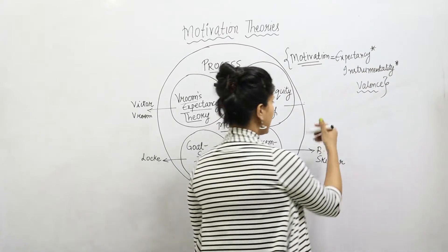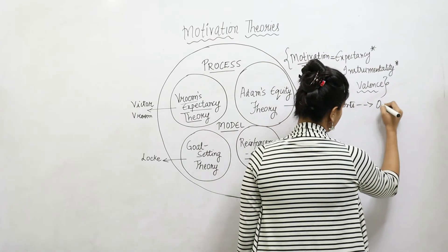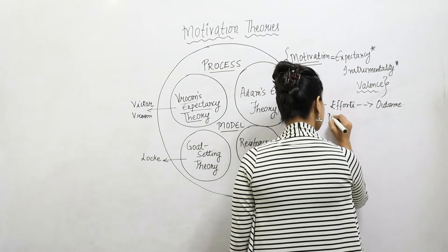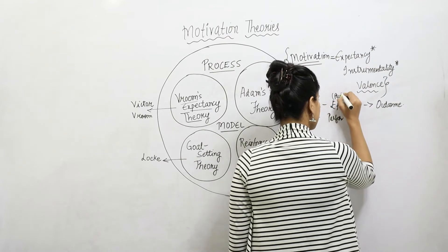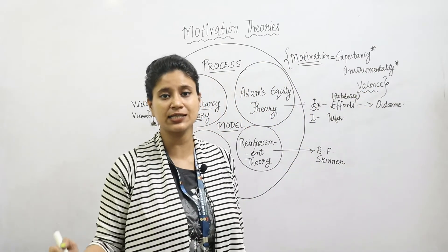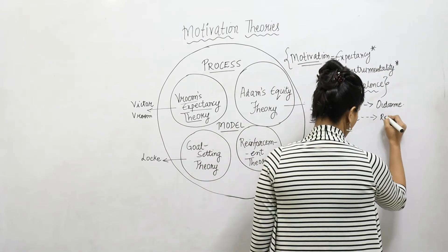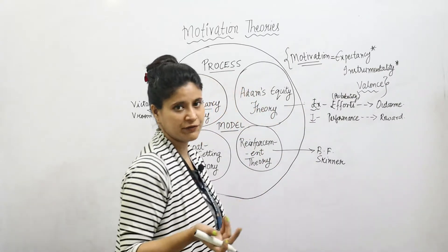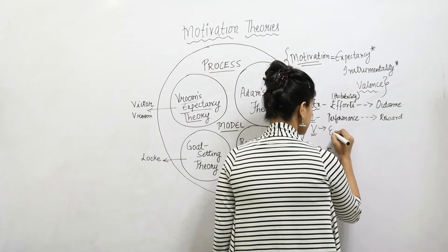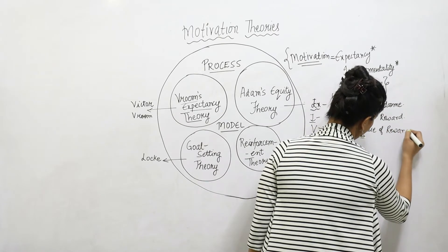Let's understand each component more clearly. Expectancy means that certain efforts lead to an outcome — if I put in efforts, they will lead me towards the outcome. Instrumentality is the probability that because I am performing and putting in efforts, it will direct me towards achieving desired outcomes. Valence is the emotional value of that reward — how important it is to receive that reward.